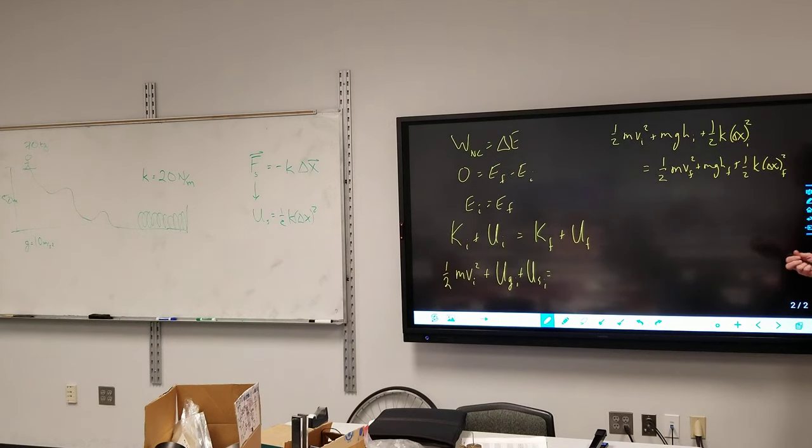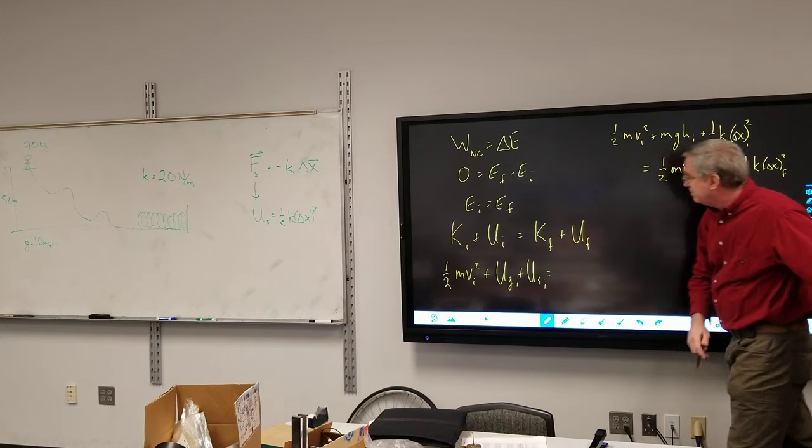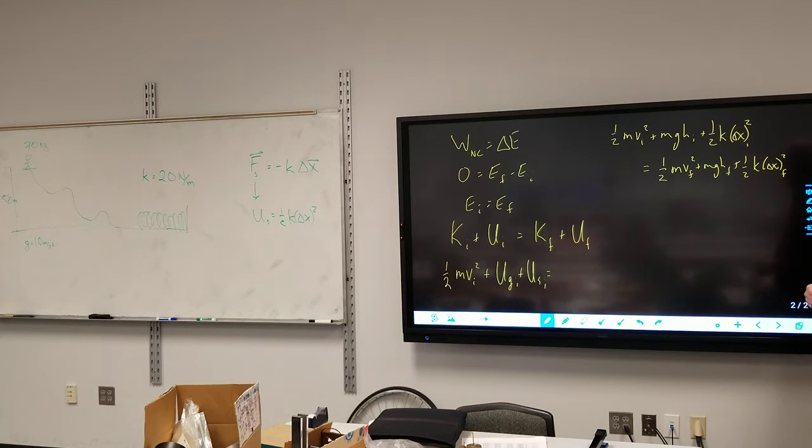Unlike before, we can't get rid of mass. However, there are some of these things that are equal to zero. So the next step is what's equal to zero? What can we get rid of before we do anything else?